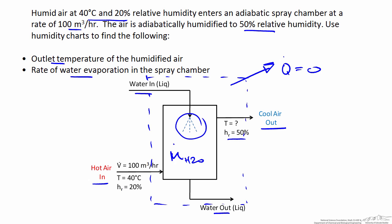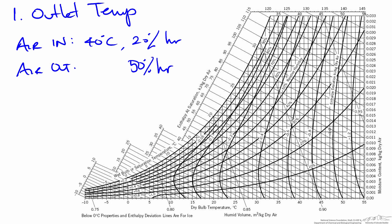So to find the outlet temperature of the humidified air, we'll go to the humidity charts to see how this process works. I've shown a reprint of the humidity charts in SI units. We know the air going into the spray chamber is 40 degrees, and that can be found on the x-axis where the dry bulb temperature is shown. So this is the temperature that would normally measure with a thermometer, and we're at 40 degrees going into the chamber. We also know the relative humidity is 20 percent, which is along this curve. So the air entering the spray chamber is represented by the intersection of these two points at approximately right here.